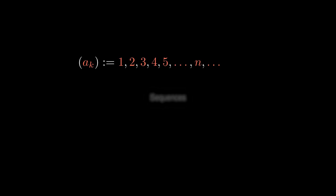For example, if we were to take each of these numbers and raise them to the power of 2, we get 1, followed by 2 squared, 3 squared, 4 squared, 5 squared, and so on. We obtain another sequence known as the sequence of square numbers.